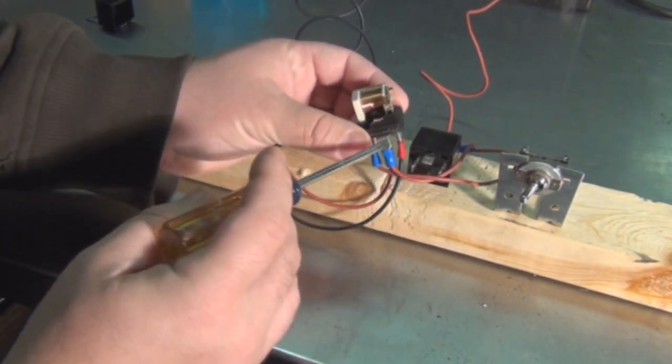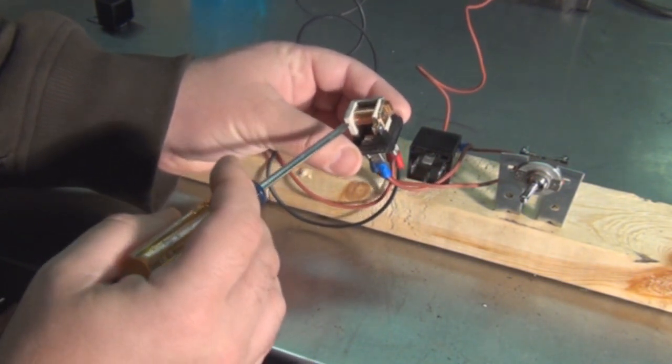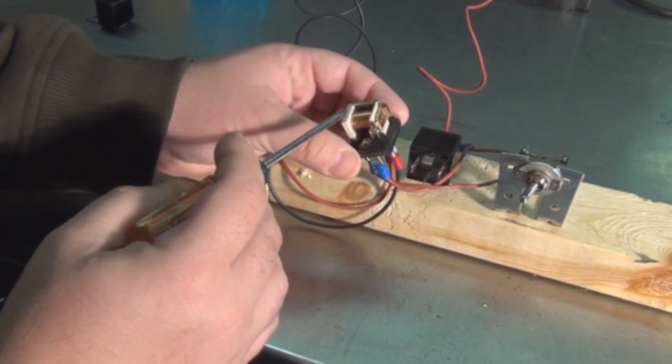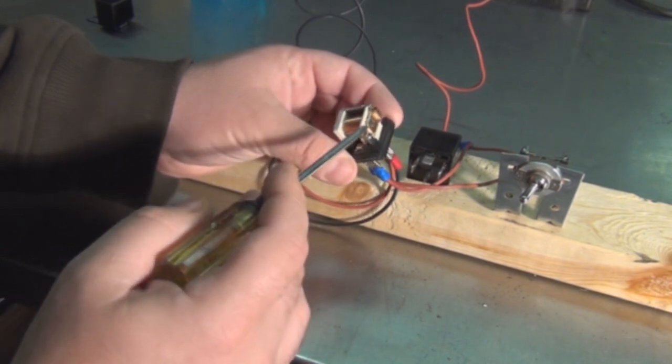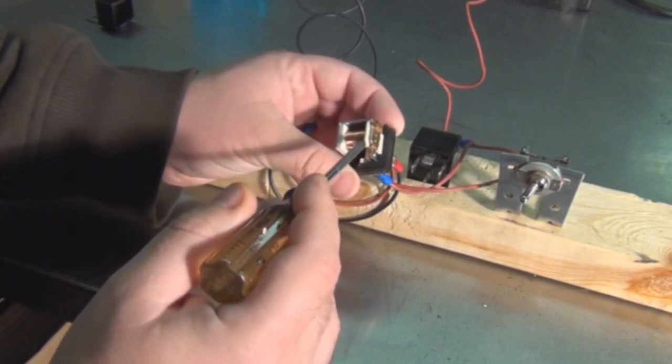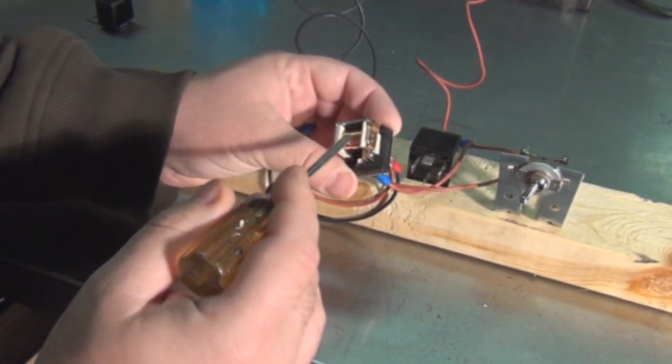What happens is the coils here conduct electricity and create an electromagnetic field around. You can't really see it, but there is a piece of metal down there. It is wrapped around a piece of metal.